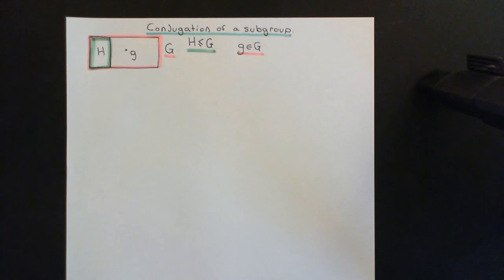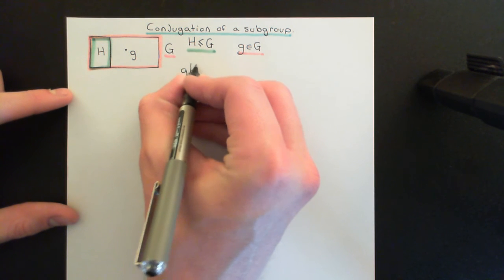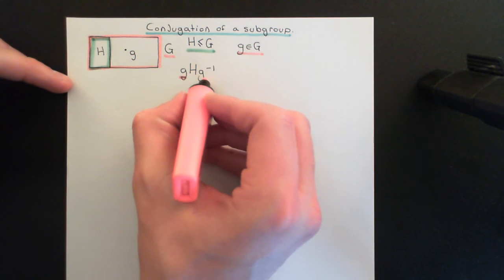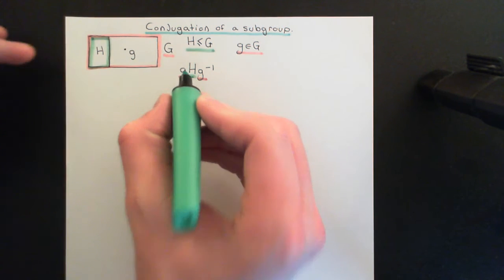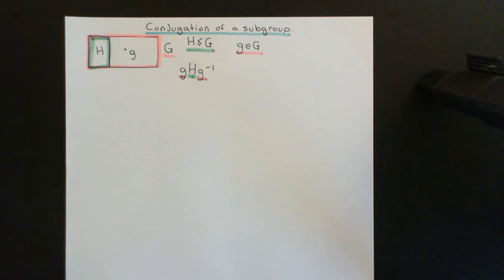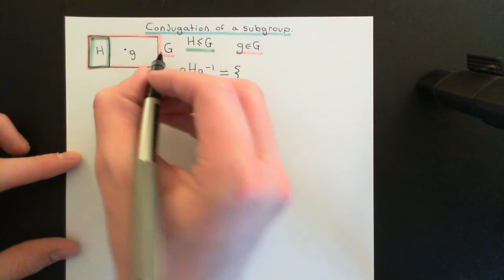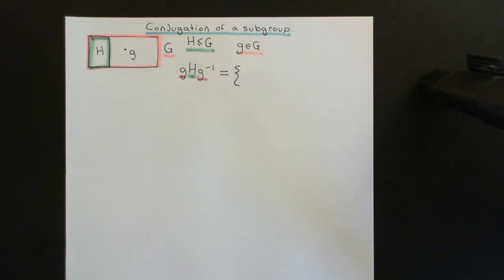So what we're now going to do is conjugate the subgroup capital H by this element little g, and I'm going to define what that's going to be equal to. The way it's written is very intuitive: we write g H g⁻¹ — just like we would write conjugation of an individual element, but with capital H denoting the fact that that's a set rather than just an individual element.